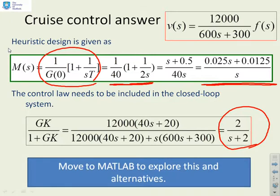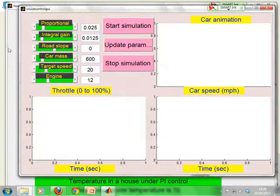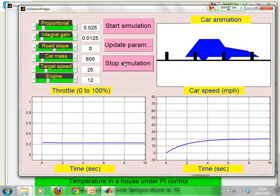There it is. So you'll notice I've put in my proportional gain, 0.025. I've put in my integral gain, 0.0125. I've set the road slope to be 0 for now. I've set the car mass to be 600. Target speed, 20 miles per hour. And the engine I've set at 12. And there's a thousand in that. So let's start this simulation. And I'll stop it there as well. Are you happy? Has that done what you expected? You remember we expected a time constant of around 2. And what do you notice looking at the bottom right-hand plot? The time constant is indeed around 2.